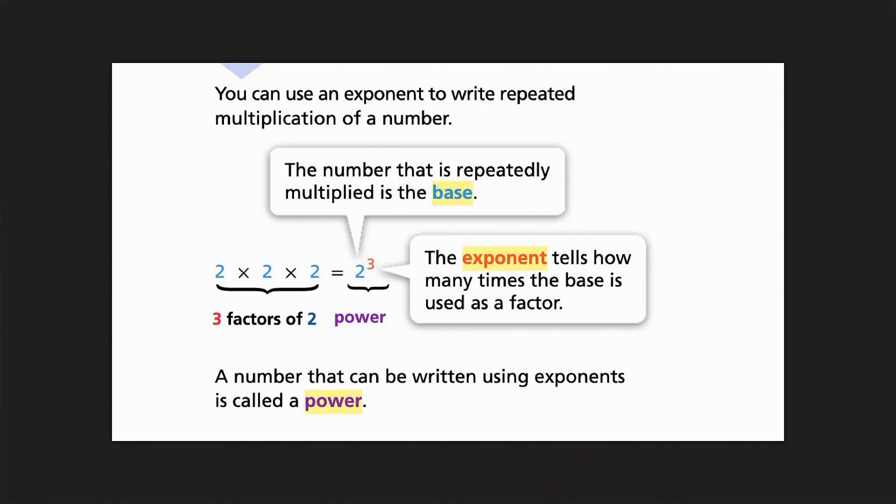Okay, so you can use an exponent to write repeated multiplication of a number. So right here, we would look at this whole chunk right here is called a power. The blue 2 down here, this number, the big number, is called the base. The base is the number that's going to be repeatedly multiplied, so you can see here that it's repeated. Okay, then the exponent guy up here tells us how many times we're going to multiply that number. So you can see here that's 3, so I would repeat 2 three times.